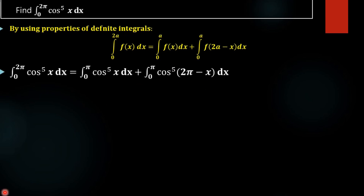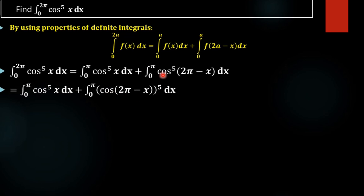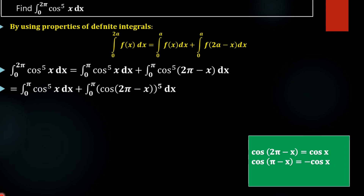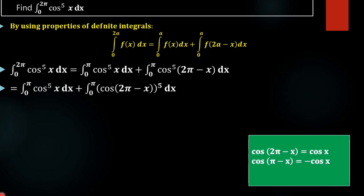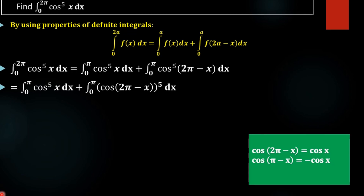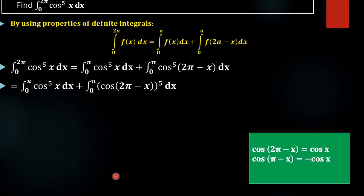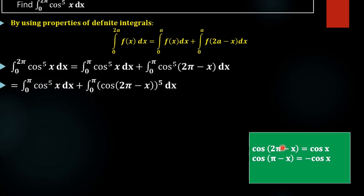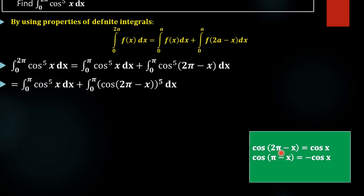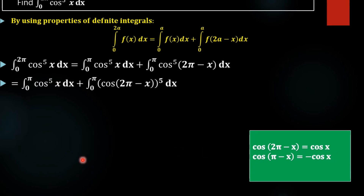In the next step, we rewrite cos⁵ as (cos x)⁵, so we have (cos(2π − x))⁵. Now, what is the value of cos(2π − x)? The angle 2π − x is in the fourth quadrant, where cosine is positive. Since 2π is an even multiple, we don't change the function — it remains cosine. So cos(2π − x) = cos x.